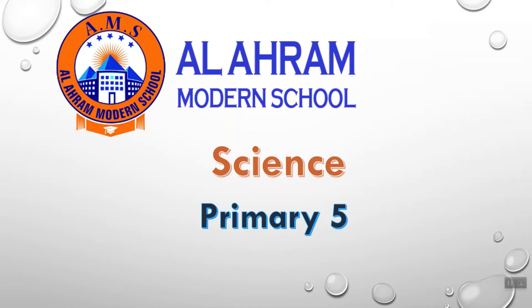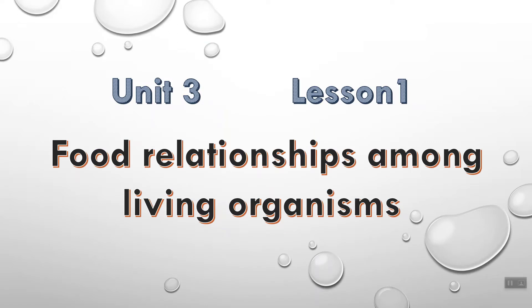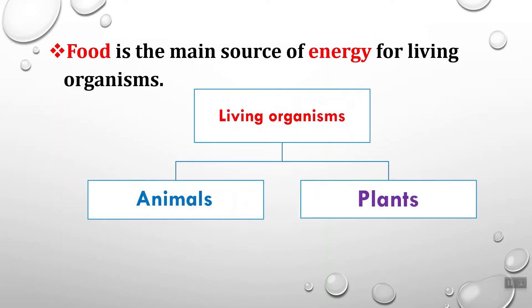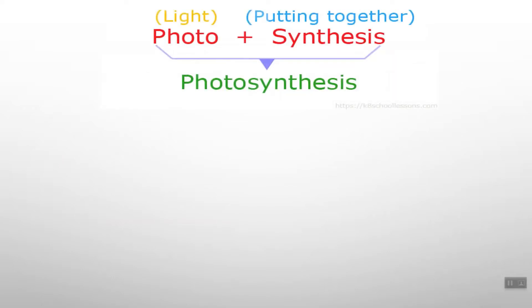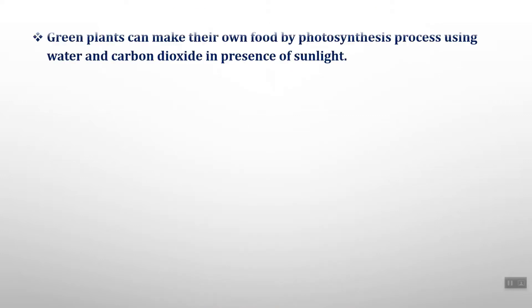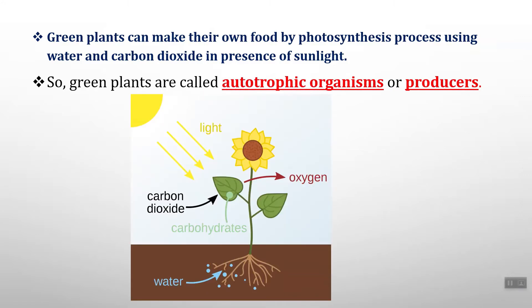Hello Primary 5! Today I'm going to explain Unit 3, Lesson 1: Food Relationships Among Living Organisms. Food is the main source of energy for all living organisms — without food, living organisms cannot live. Plants and animals are living organisms. Plants can make their own food through a process called photosynthesis, using carbon dioxide from the air, water from the soil, and sunlight from the Sun.